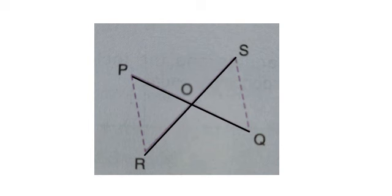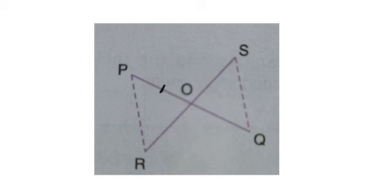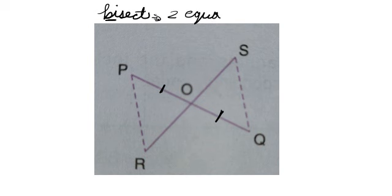It is clearly given in the question that these two lines bisect each other at point O. Bisect each other means that the line is divided into two equal parts. Whenever you see 'bi,' it means it divides into two equal parts.